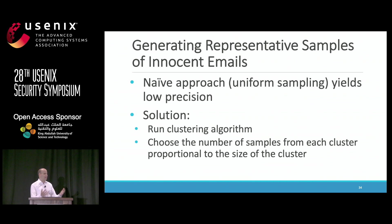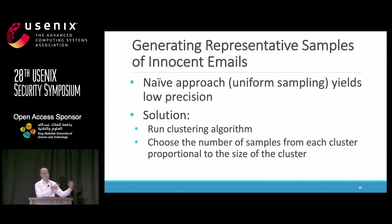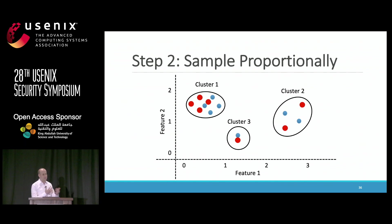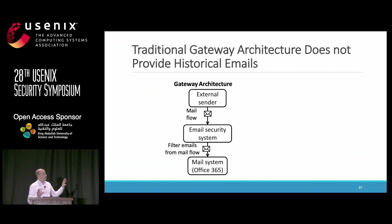Even if you train on a small number of innocent emails, uniformly sampling from them yields a classifier with low precision, because you're likely to miss important innocent email examples. To overcome this, we ran a clustering algorithm on the innocent emails using the classifier's feature set, then proportionally sampled from each cluster according to the number of samples needed. To illustrate: you map innocent emails to their features, run clustering, then proportionally and randomly sample from each cluster to train the classifier.